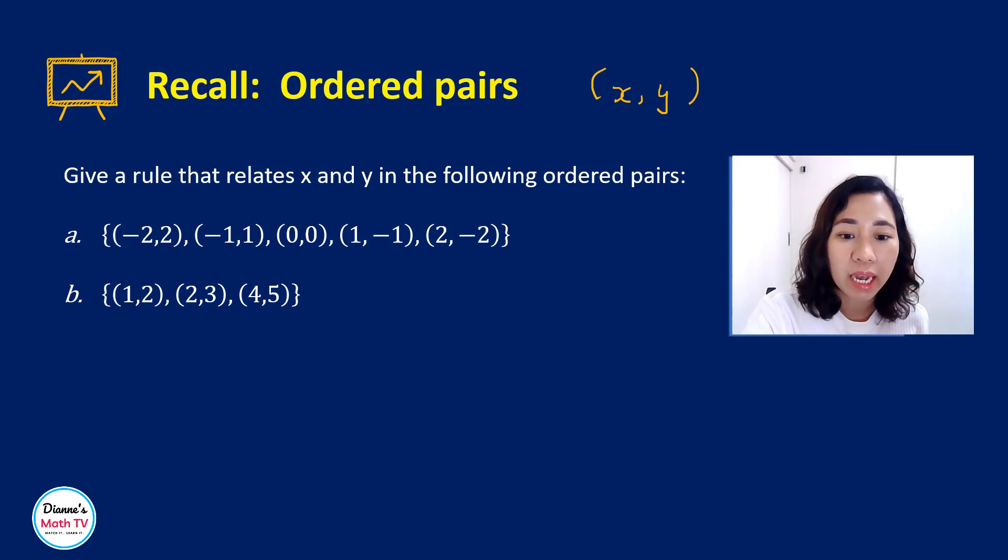So for example, let's look at letter A. What can you observe, class, about the x and the y-coordinates? They just differ in sign. Correct? So here, if x is negative 2, y is just the negative of that, which is 2.